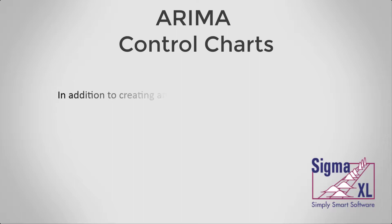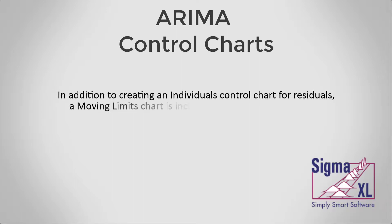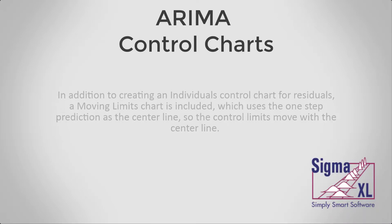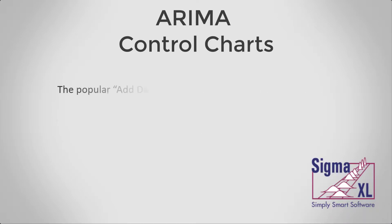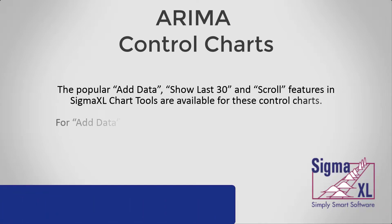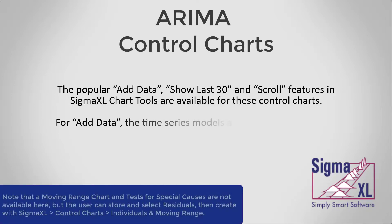In addition to creating an individuals control chart for residuals, a moving limits chart is included, which uses the One Step Prediction as the center line so the control limits move with the center line. The popular add data, show last 30, and scroll features in Sigma Excel chart tools are available for these control charts.